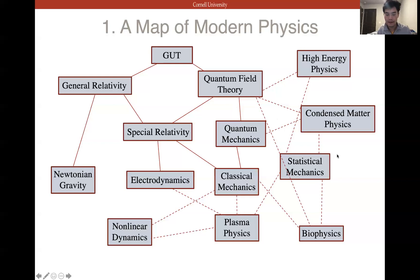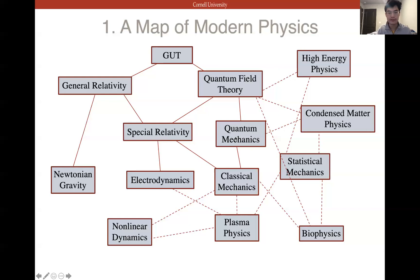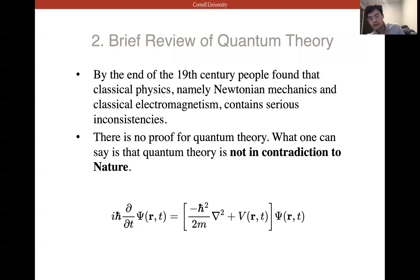We want to show how a theoretical idea from quantum mechanics can be developed and directly turned into something useful — making calculations using quantum mechanics. So let's have a brief review of quantum theory. By the end of the 19th century, people found that classical mechanics and classical electromagnetism contain serious inconsistencies. Moving into the really small scale, we need a new set of theories called quantum theory. There is no proof for quantum theory — we can only say that quantum theory is not in contradiction to nature.